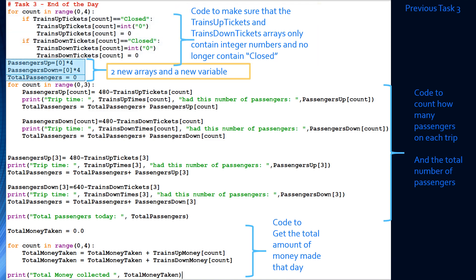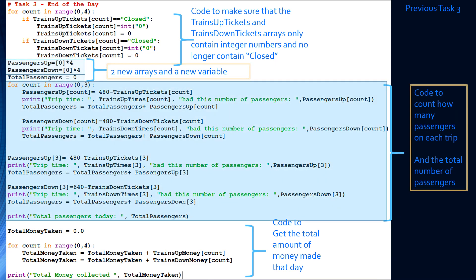Next, we added two new arrays: passengers_up, an integer array initialized to zeros, and passengers_down, also initialized to zeros. We also added a new variable called total_passengers. These two arrays are going to hold how many passengers went on each train. After that, we have a for loop whose purpose is to store how many passengers went on each train ride.